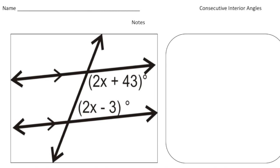We have two parallel lines and we have a transversal. This angle right here as well as this angle right here are same side interior, and we know that the sum of those is going to be 180 degrees. So let's write an equation to solve it. We're going to have 2x plus 43 plus 2x minus 3 equals 180 degrees.